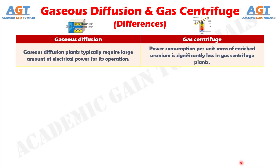Difference number 10. Gaseous diffusion plants typically require a large amount of electrical power for their operation, whereas power consumption per unit mass of enriched uranium is significantly less in gas centrifuge plants.